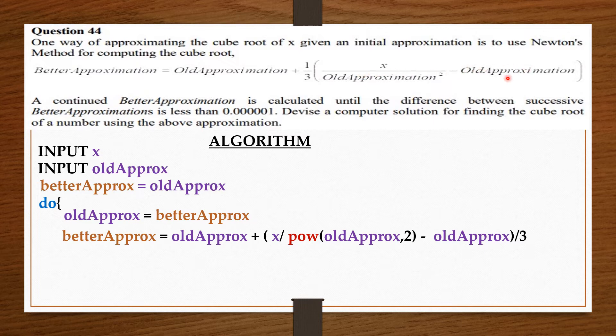Now what this is going to do is that you realize we save the copy of oldApprox in betterApprox on top. The reason is that the value of oldApprox and betterApprox is going to keep changing. But we want the first value for oldApprox to be the value the user entered. That is why we first save the copy of the oldApprox in betterApprox.